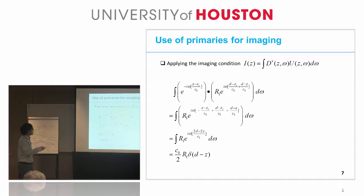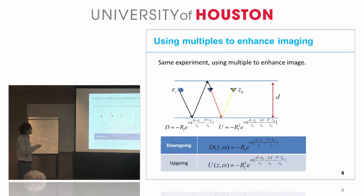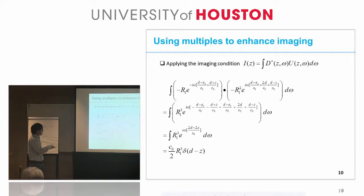This is standard primary imaging. Similar idea is we use finite-difference method adapted to use multiples to enhance imaging. In the same experiment, we interpret the D wave field as the receiver side ghost associated with the primary, represented by the dark solid line, and interpret the U wave field as the recorded first order surface multiple. As Dr. Weglein mentioned, both source side and receiver side ghosts. With this interpretation, we can also correctly locate the depth of the reflector with a different reflection coefficient using this cross-correlation imaging condition.